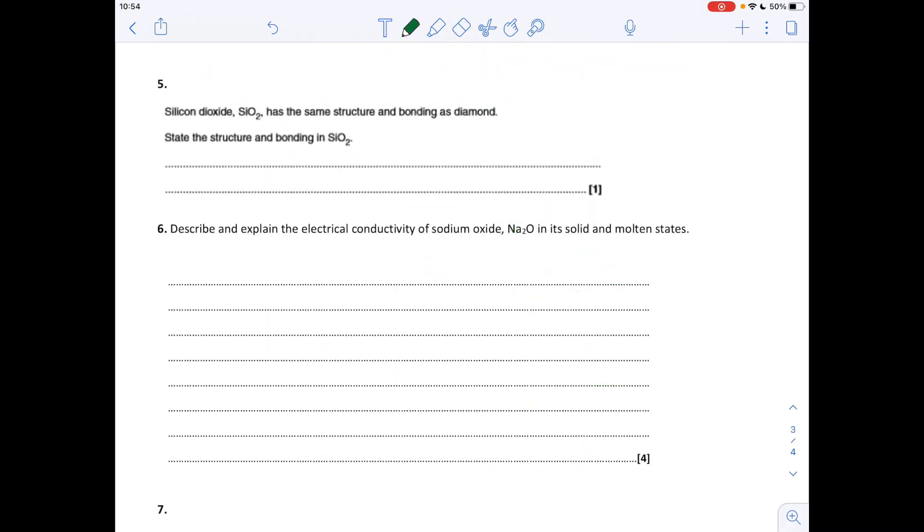Question five. Silicon dioxide has the same structure and bonding as diamond, so hopefully everyone knows that diamond is giant covalent, and so therefore silicon dioxide will be as well.